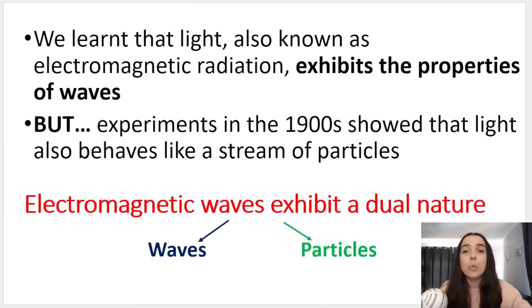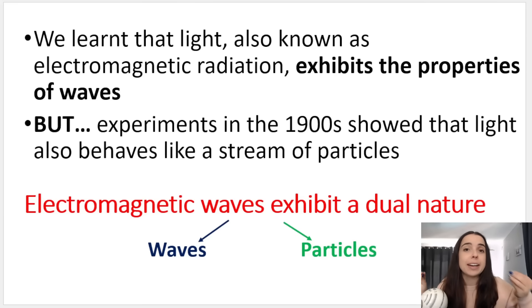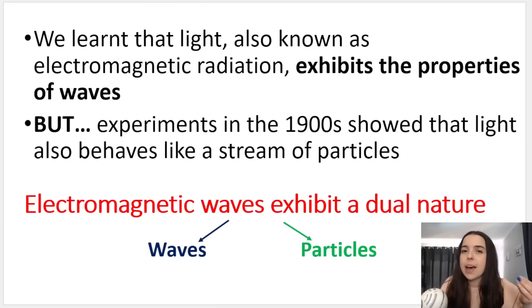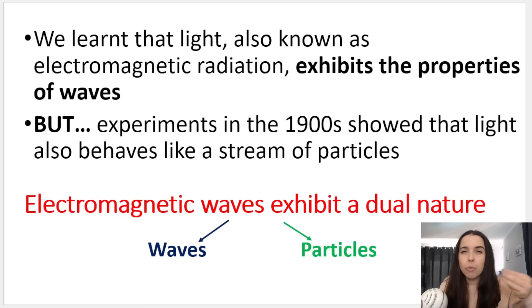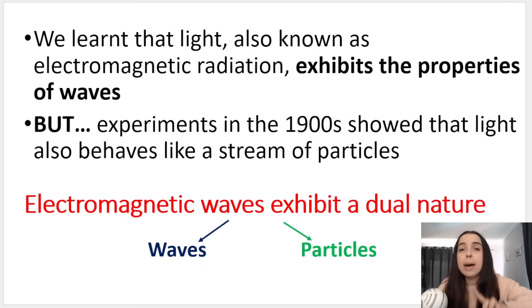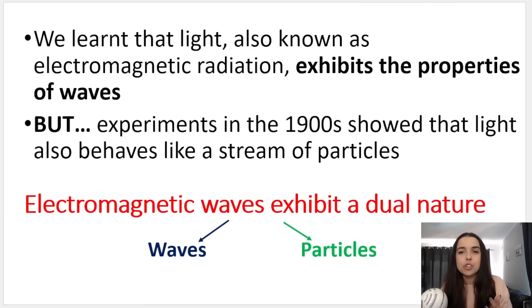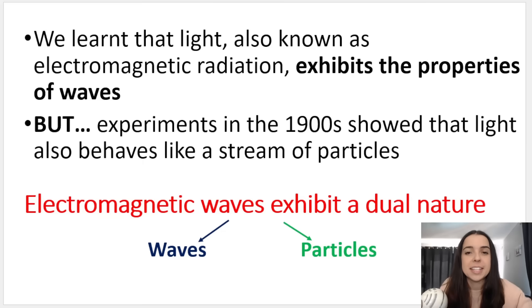You'll remember that in grade 10 we learned about light or electromagnetic radiation and we said that this exhibits properties of waves, so light acts as a wave. But in the 1900s, experiments showed that light also behaves like a stream of particles.